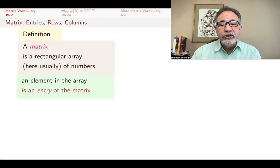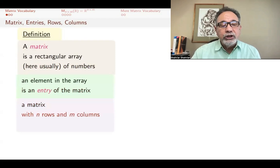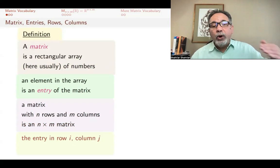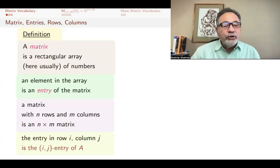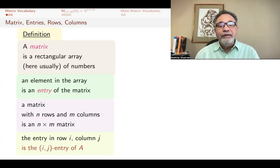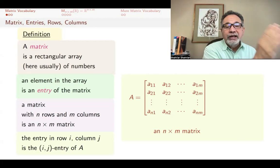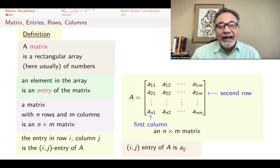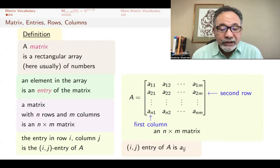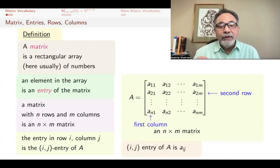An element in that rectangular array is called an entry of the matrix. A matrix with n rows and m columns is an n by m matrix. The entry in row i, column j is called the ij entry of A. For example, here's an n by m matrix. It has n rows and m columns. That's its second row, and here is its first column. And the ij entry of this matrix A is A sub ij, the entry in row i, column j.